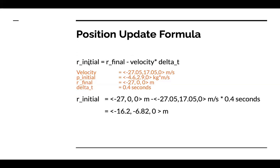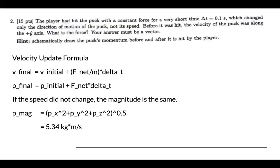That is r_initial. Basically, this is an altered version of the formula. It basically separates r_final is equal to r_initial plus velocity into delta t. But because we need r_initial, I flipped the equation to get r_initial. And this is the r_initial, 16.2 minus 6.82 and 0 meters.